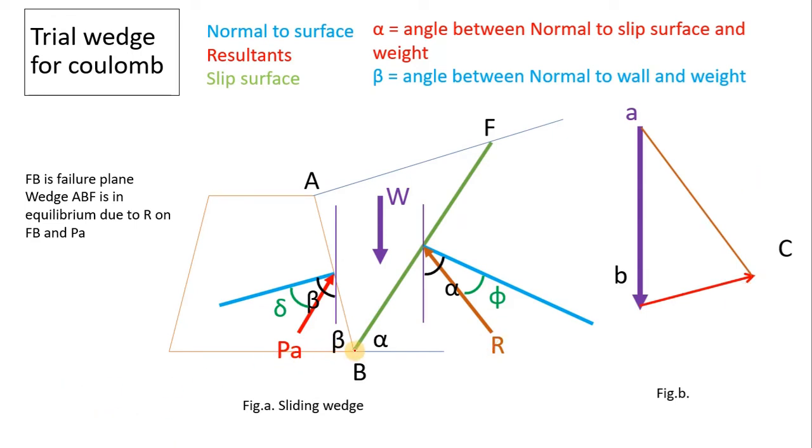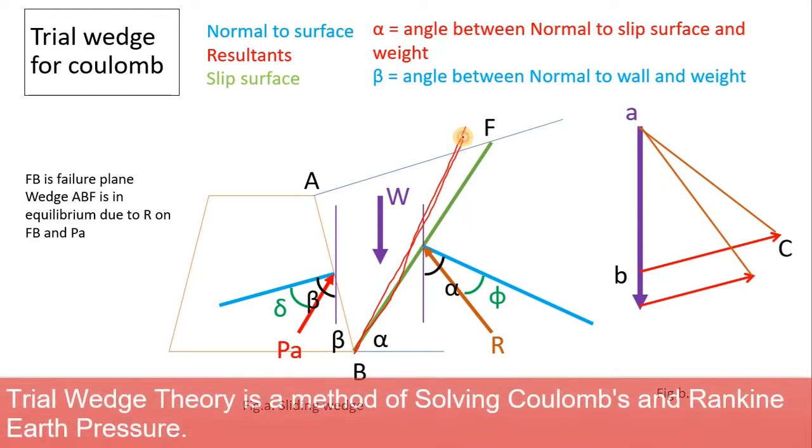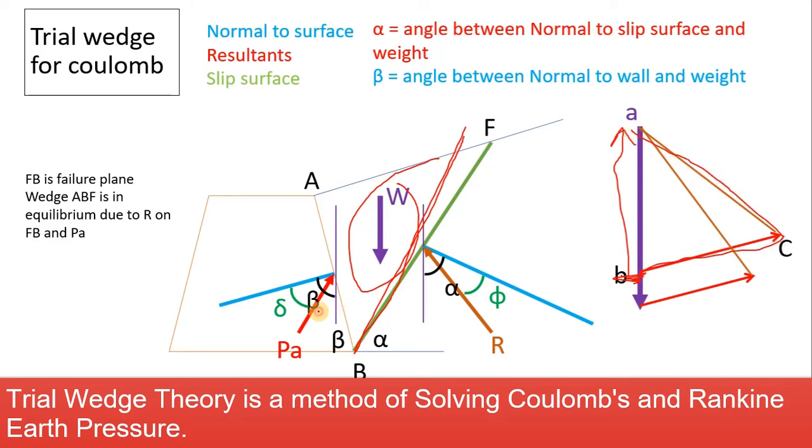Now if you take another failure plane, the weight will reduce. Suppose this is our failure plane, then the weight has reduced. See, here the weight has reduced, only this much weight is taken, and PA and R are drawn parallel respectively.